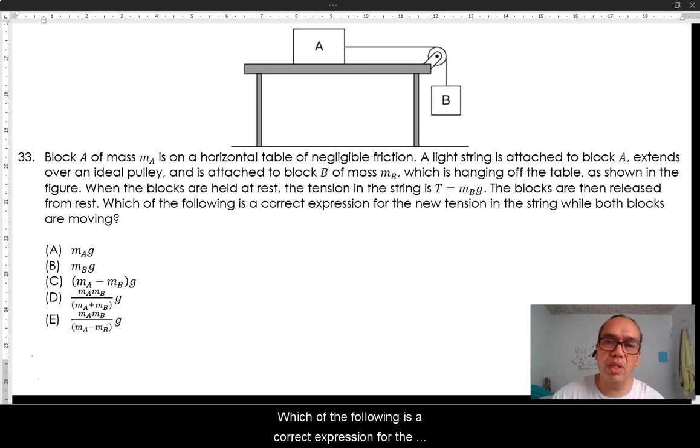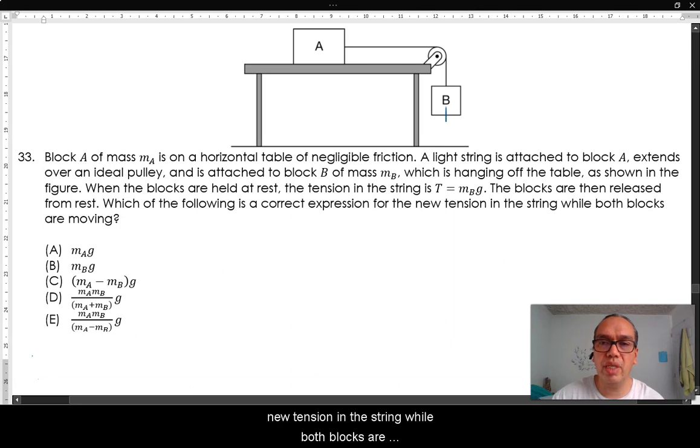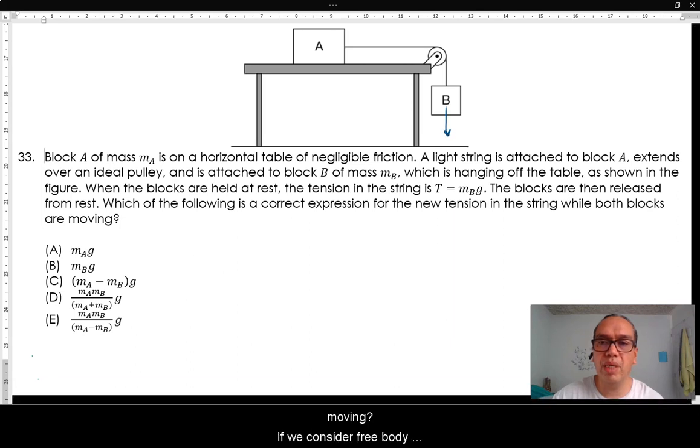If we consider free body diagrams for each of the blocks, we can see that block B has a downward force MB times G, the weight of the block, and an upward retarding force, which is the tension.